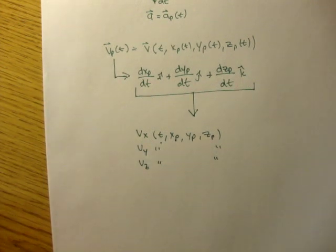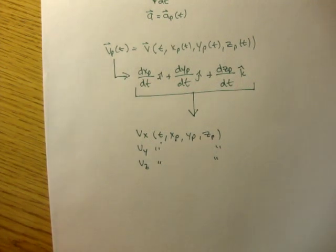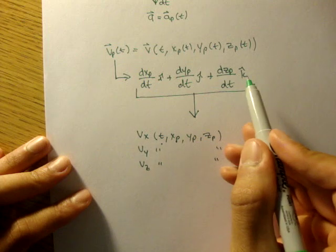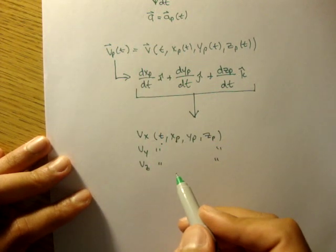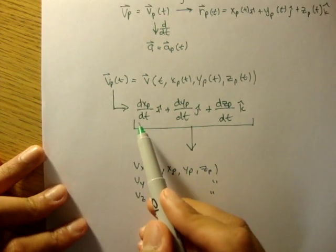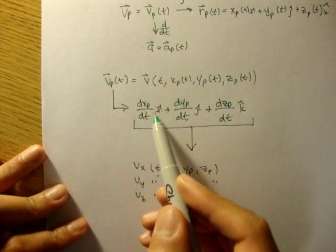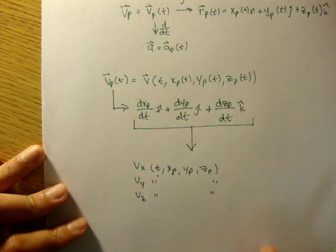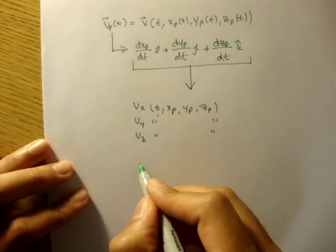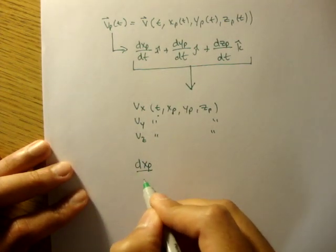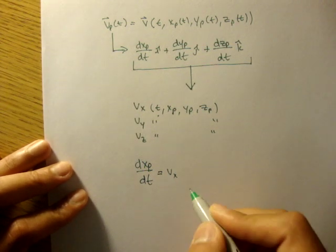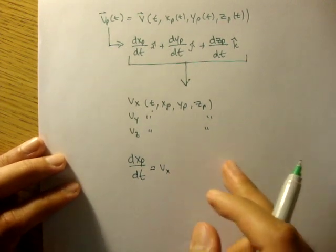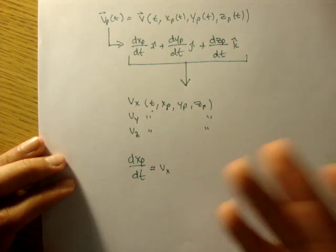So if we defined this to be the velocity field, and this to be the velocity field, could we agree that the x component of this is equal to the x component of this? They're both velocity field. Well, yeah. We can say dxp/dt is equal to v of x, and dyp/dt is equal to v of y, and so forth.